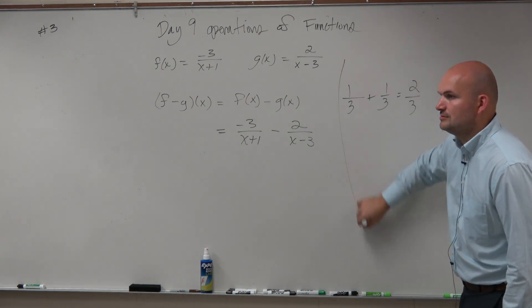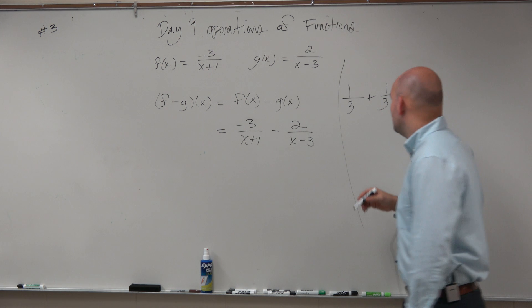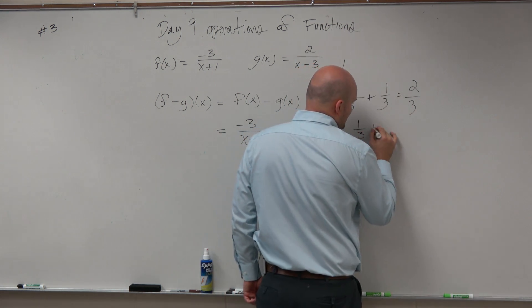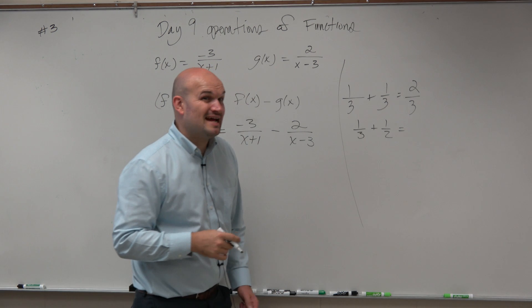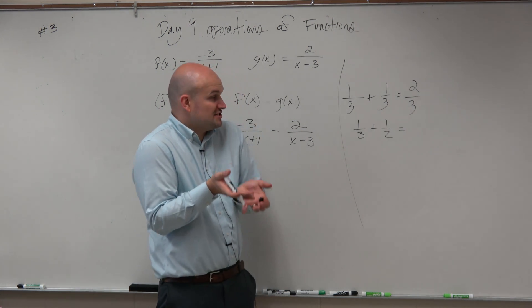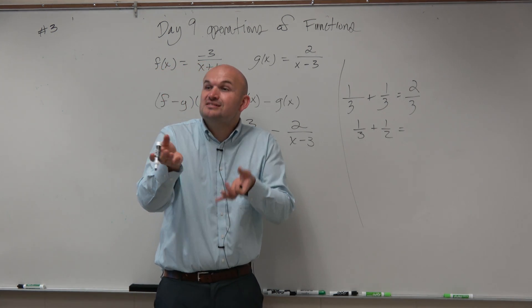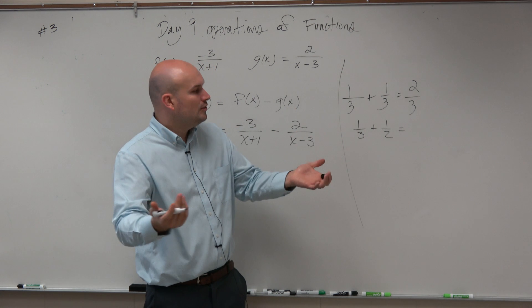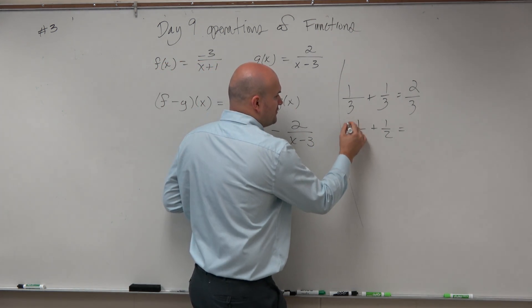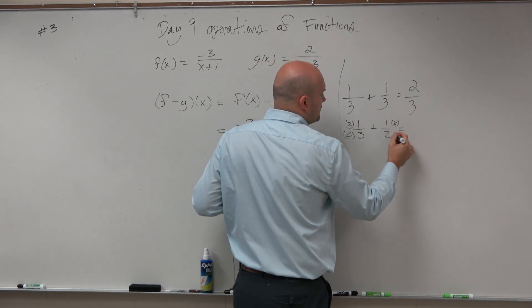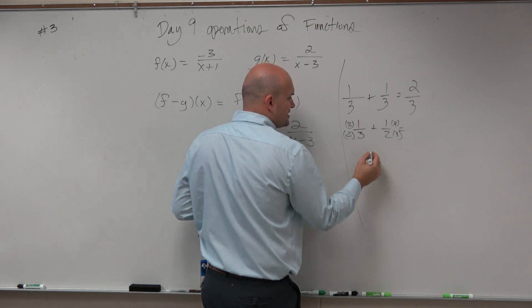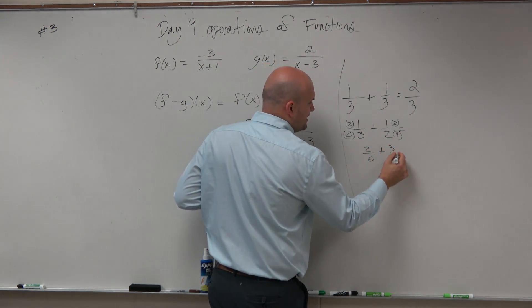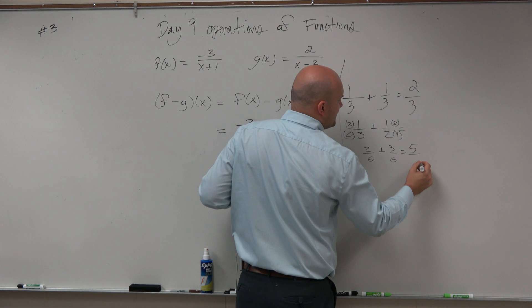This is just a little sidebar, just to kind of go back and remember fractions. So if I had 1 over 3 plus 1 over 2, to get the common denominator, I basically got to say, what number does 3 and 2 both divide into? What's the smallest number that they both divide into? Which would be 6. So you'd multiply by 2 over 2 over here, and 3 over 3 here. And you'd get 2 over 6 plus 3 over 6, which equals 5 over 6.